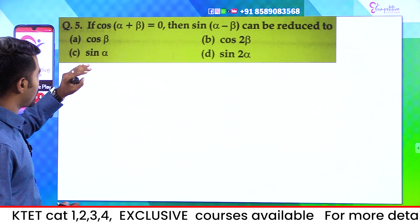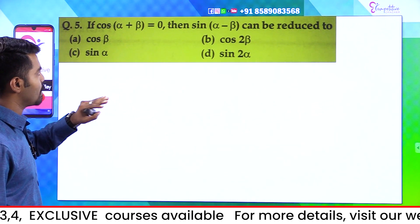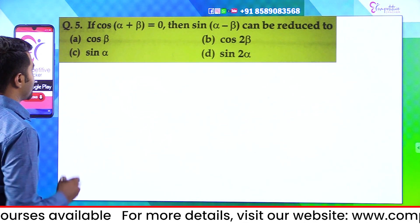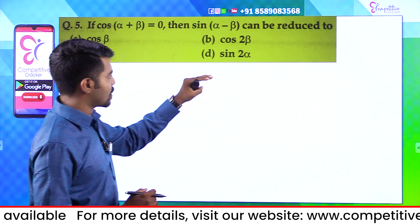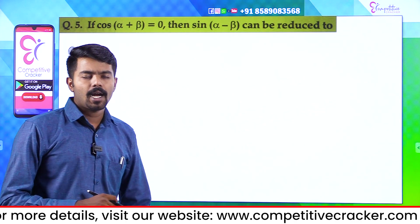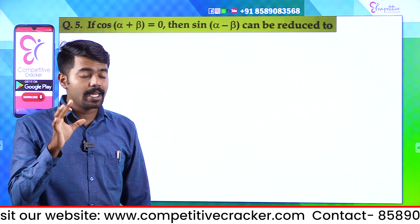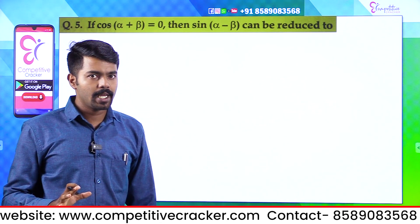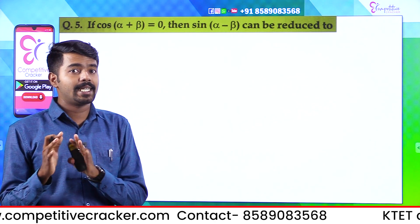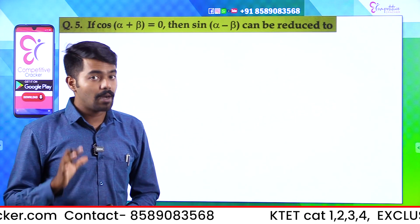If cos(α+β) = 0, then sin(α−β) can be reduced to: Option A, cos β; Option B, cos 2β; Option C, sin α; Option D, sin 2α. We will use the trigonometric table — the basic values at 0°, 30°, 45°, 90° for sin, cos, and tan — these are values to know by heart.